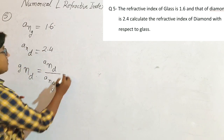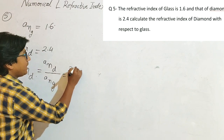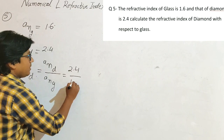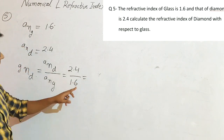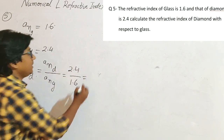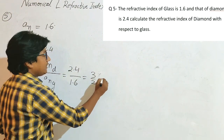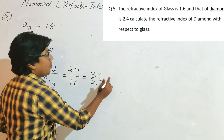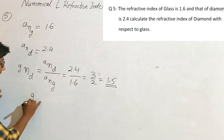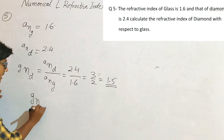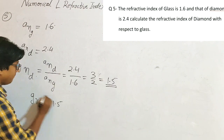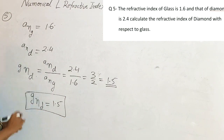So, and = 2.4 and ang = 1.6. The refractive index of diamond with respect to glass (gnd) = and / ang = 2.4 / 1.6 = 3/2 = 1.5. So the refractive index of diamond with respect to glass is 1.5.